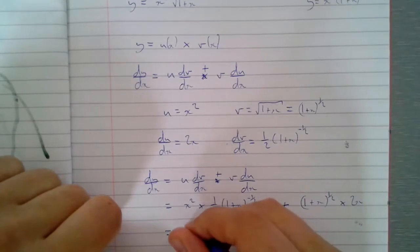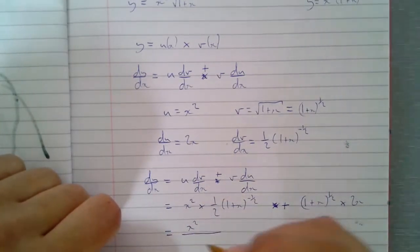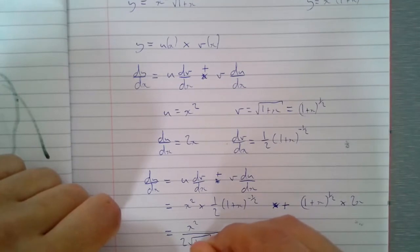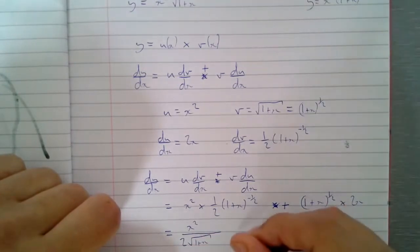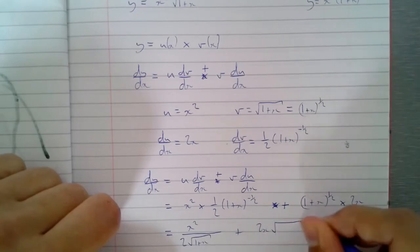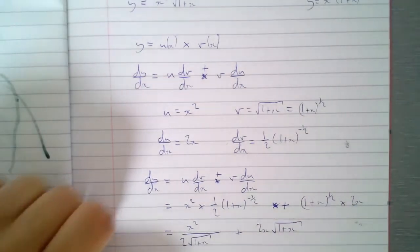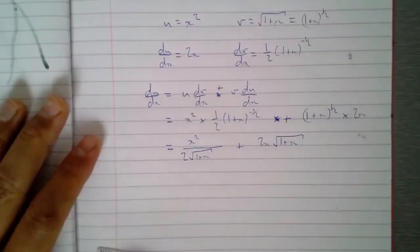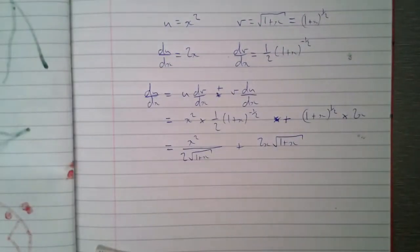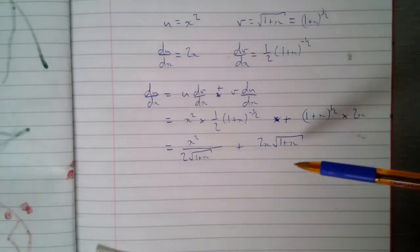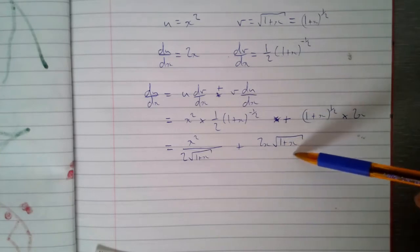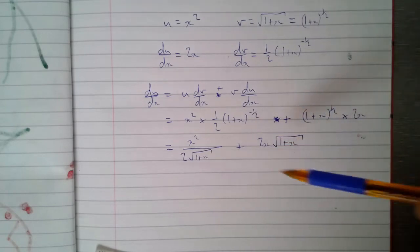And so all together that gives me x squared over two one plus x plus two x one plus x plus square root. Okay so what you could do from here is you could simplify this slightly if you were so inclined. The chances are, when I say simplify, I mean I could write this as I could change the denominator here to two square root one plus x, obviously times the top by the same thing just to make it one fraction.